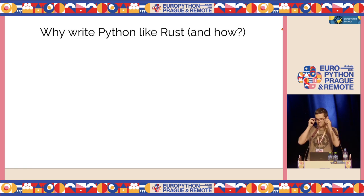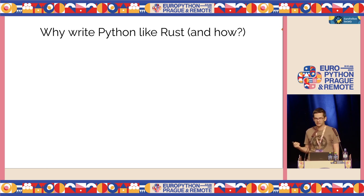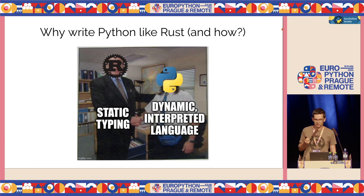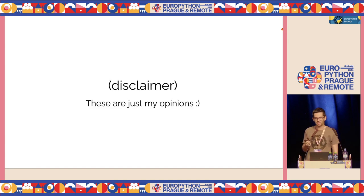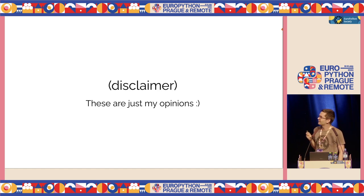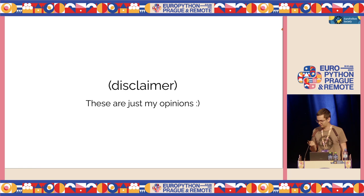I wanted to port this great experience from Rust to other languages, including Python. So this talk is essentially about why and how I write Python in a way that is a little bit similar to how I write Rust — essentially trying to port some notions of static typing and strong type systems to a language that is otherwise very dynamic. A small disclaimer: everything I show here is just my opinions. I'm not trying to tell you how to write Python code, just showing you how I do it, and maybe you can find some inspiration.